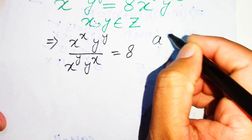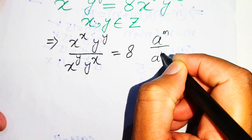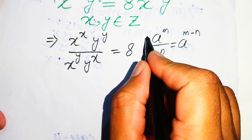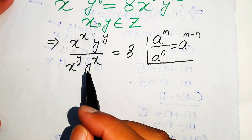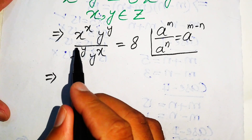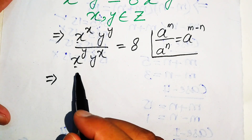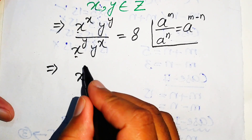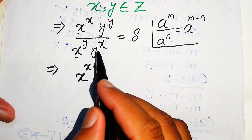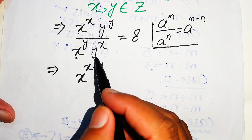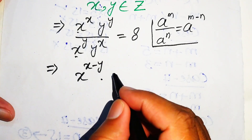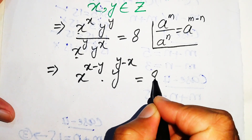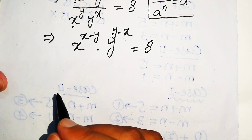We apply the exponential law: a to the power of m over a to the power of n equals a to the power of m minus n. Since the bases on certain terms are the same, we subtract the exponents. This gives x to the power of x minus y, times y to the power of y minus x, equals 8.